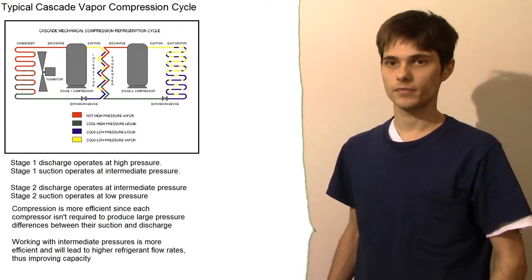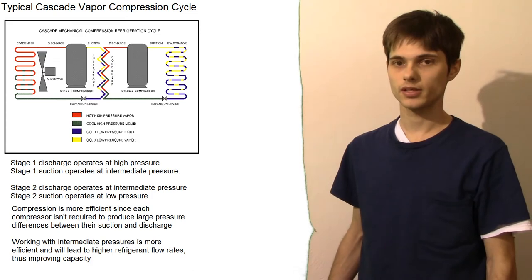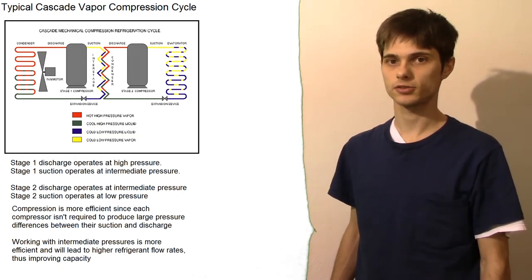Now, the intermediate pressure, or the suction side of the high temperature cycle, will be the evaporator and that will be the heat exchanger. Now, this part will be key to getting heat from the low temperature cycle up to the high temperature cycle.